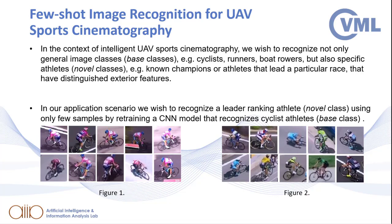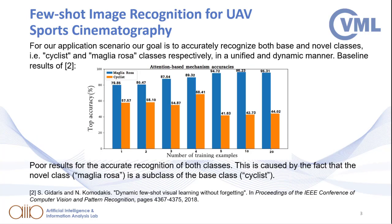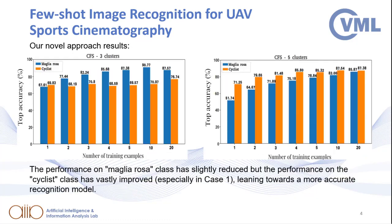In our application scenario, we wish to recognize the ranking leader of the cycling race Giro d'Italia, namely Maglia Rosa, using only a few recorded images and a CNN model trained to recognize cycling athletes in general. Using the baseline method, we noticed that the recognition of the novel subclass is greatly favored over the recognition of the base class. Our proposed approach enables accurate recognition of both types of classes, leaning toward a more balanced model.